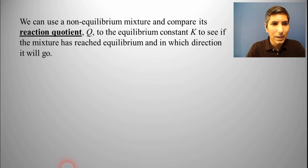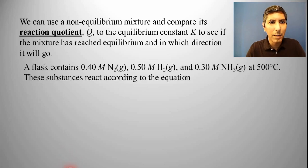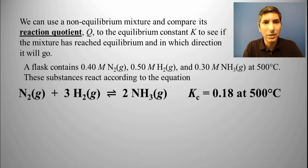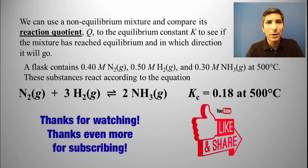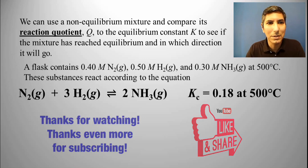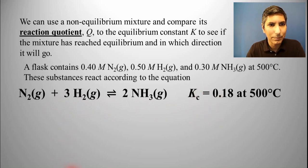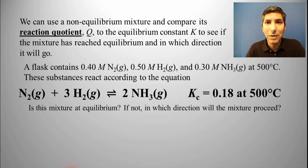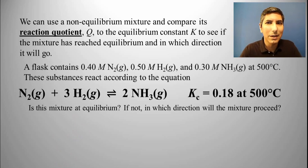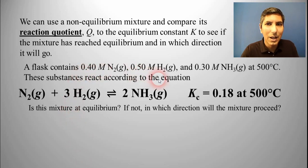Let's see how this works. Let's say we have this problem, where there's a flask that contains 0.40 molar nitrogen gas, 0.50 molar hydrogen gas, and 0.30 molar ammonia gas at 500 degrees Celsius. They're going to react according to that equation, and we have an equilibrium constant. The question is: is the mixture at equilibrium, and if not, in which direction is it going to proceed? We need to take these concentrations and plug them into the expression for the reaction quotient.